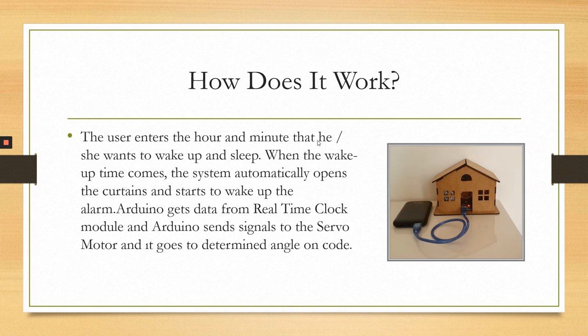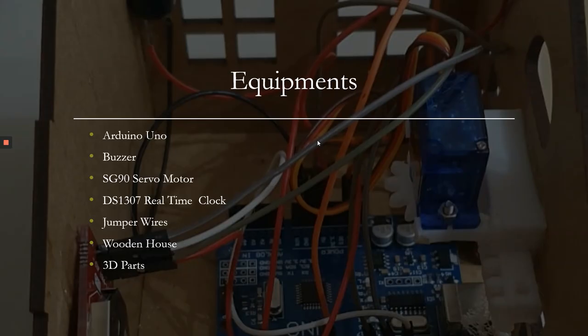You can change the time in the code to fit your daily routine. Equipments: Arduino Uno, buzzer, servo motor, real-time clock, jumper wires, wooden house, and 3D parts.